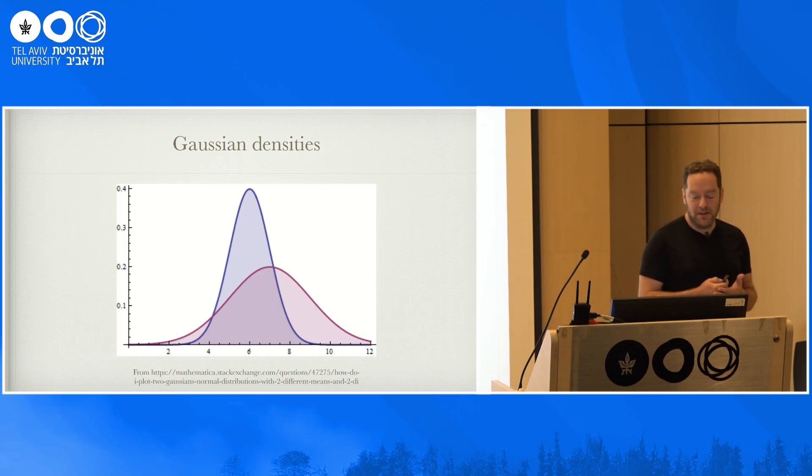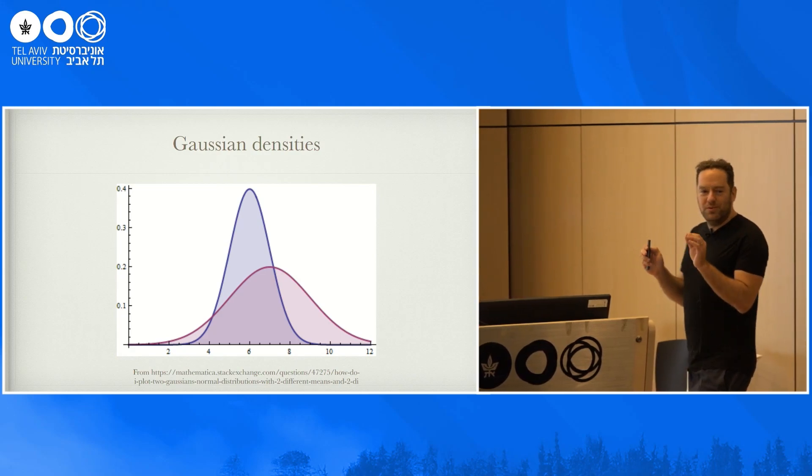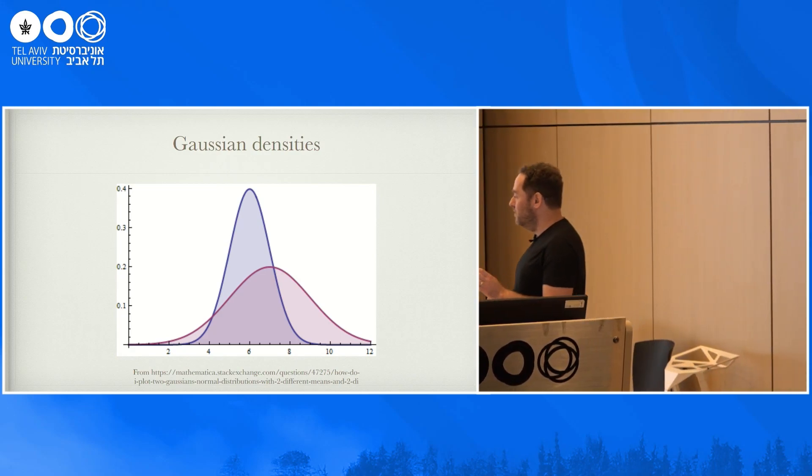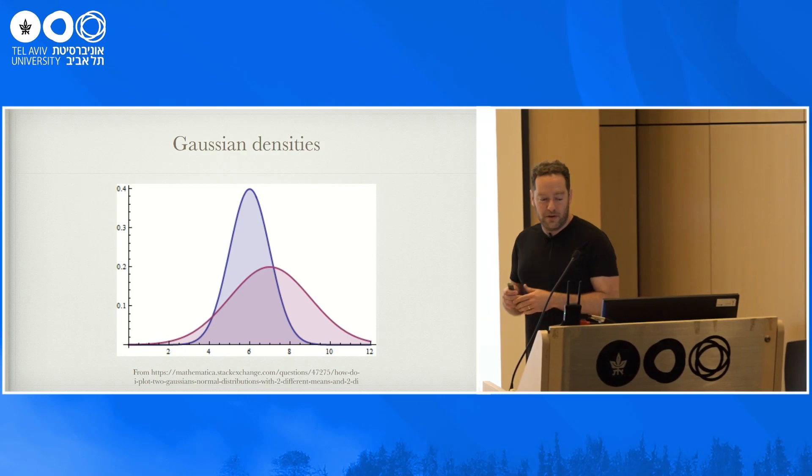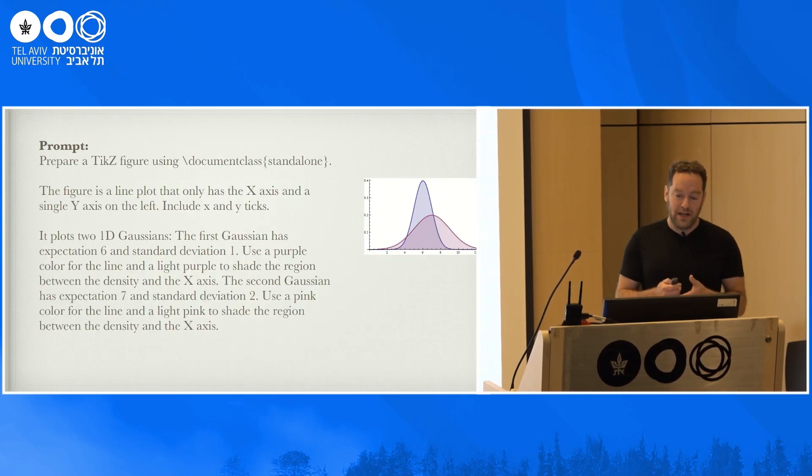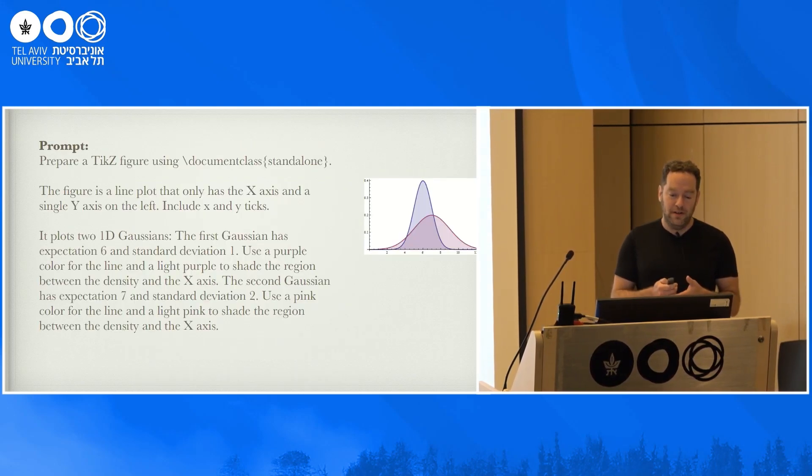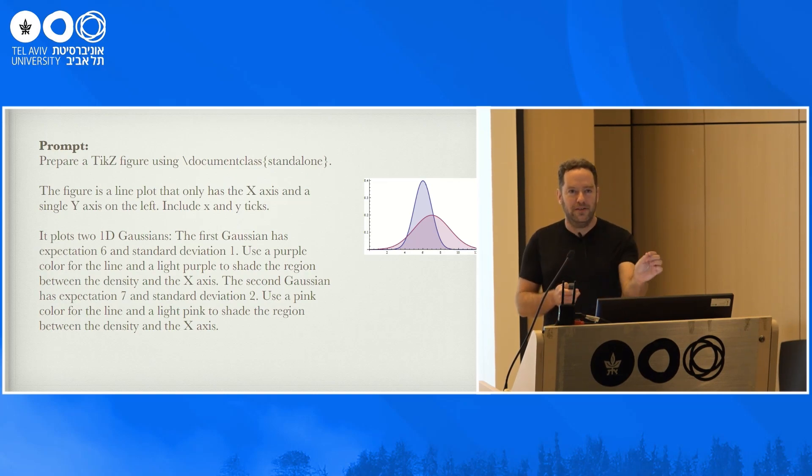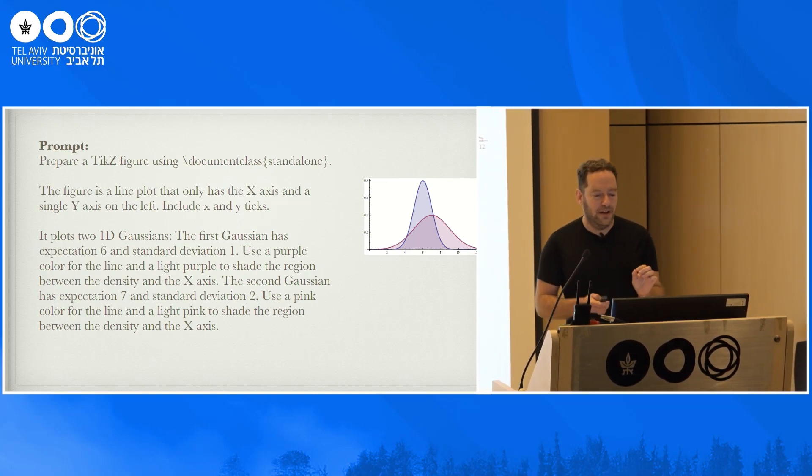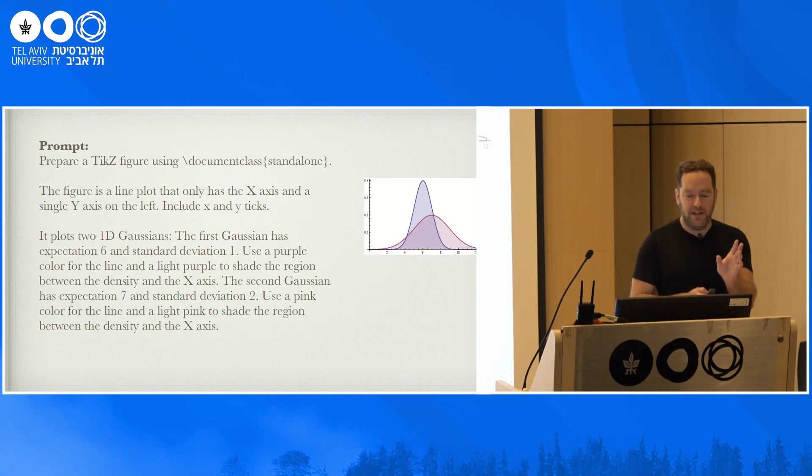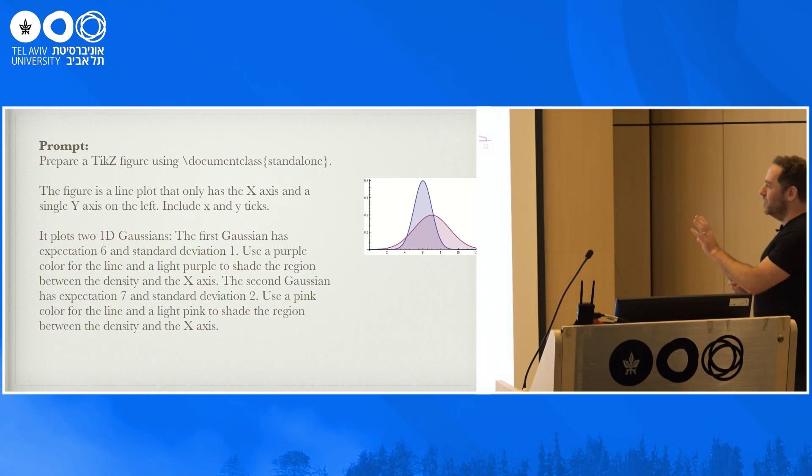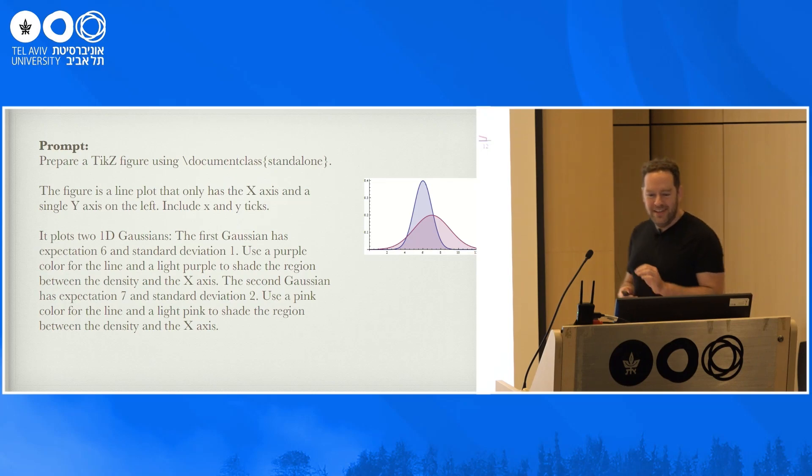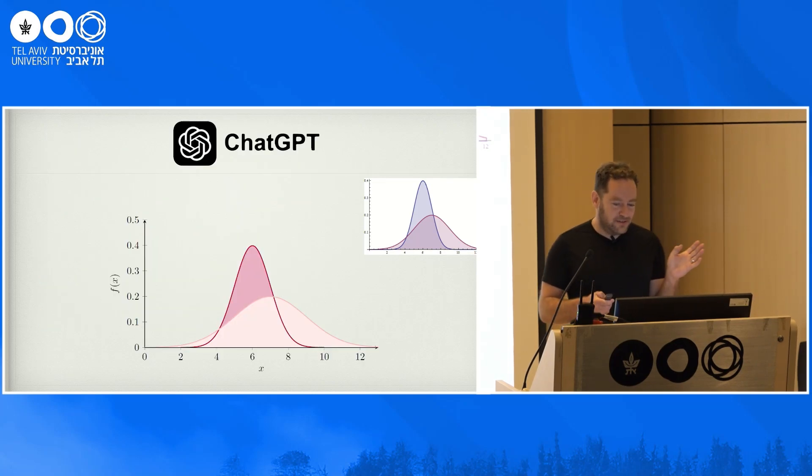For the second benchmark, I took kind of a plot of two densities of Gaussians with different expectations and variances. And for the plot, I actually told the chats in the prompt, I told them exactly what I want to obtain, like which expectation for which plot and what is the variance. So I gave specific numbers and colors. I tried to make the prompts very detailed.